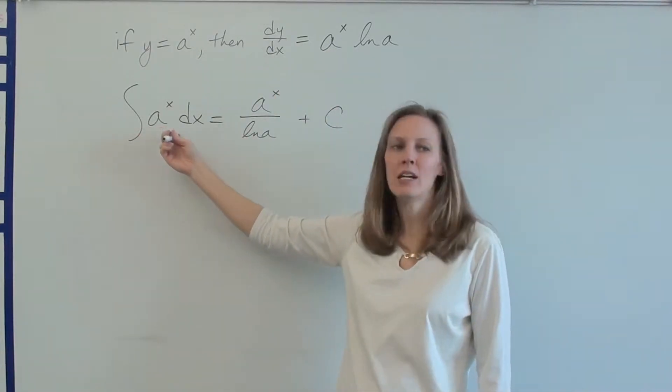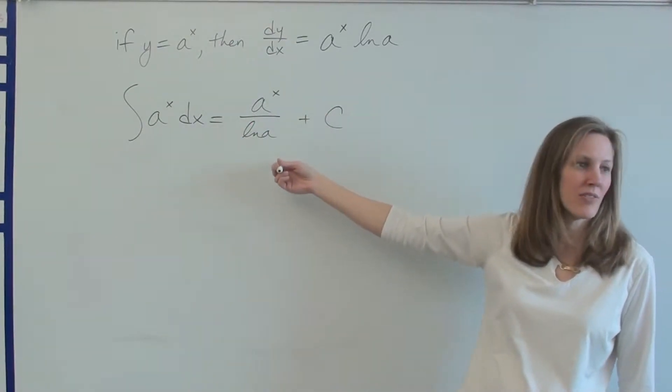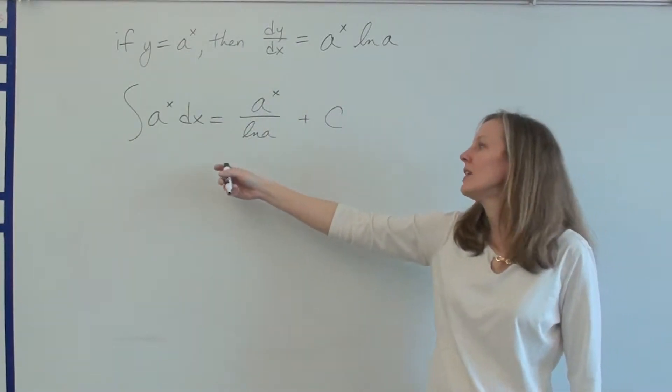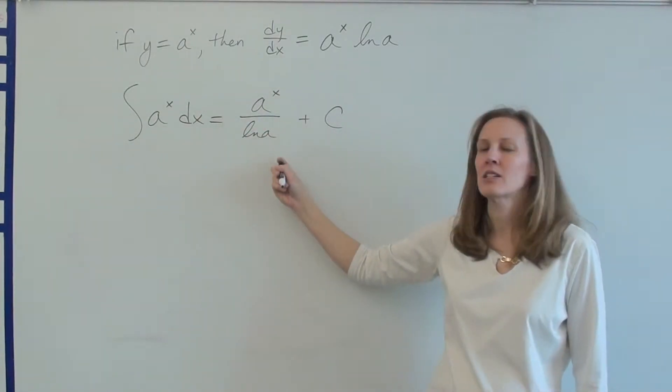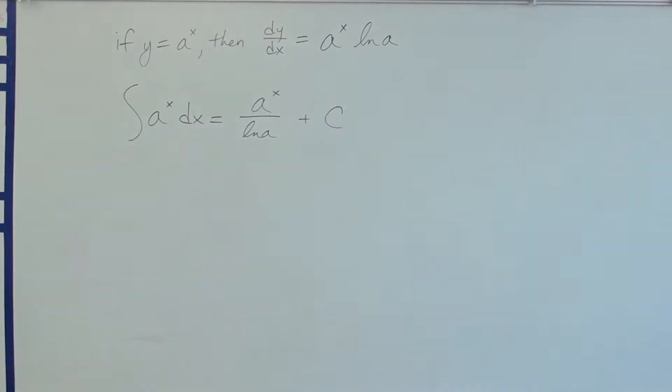So if we're doing the integral, the anti-derivative of a to the x, it's a to the x over ln A. Because basically what you're doing is dividing out the ln A that you multiplied in when you took the derivative. So the integral of a to the x is a to the x over ln A. Alright, good! And that's today's lesson.